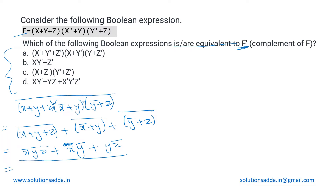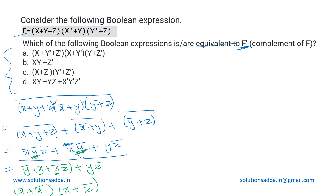So this is what we have for f̄. Let us see if we can simplify further. We can take ȳ common from two of the terms, giving ȳ(x + x̄z̄) + yz̄. Here we have x and x̄, so we apply the distributive law: x + x̄z̄ = (x + x̄)(x + z̄). Since x + x̄ = 1, we are left with ȳ(x + z̄) + yz̄.